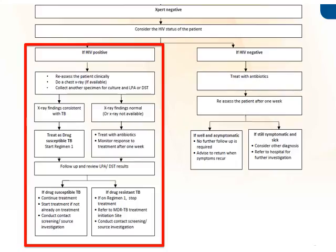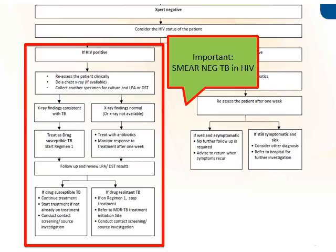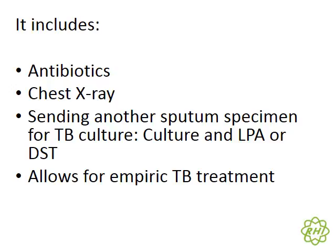Once we have our X-ray results, if they are suspicious of TB, even if the patient is GeneXpert negative, we will start that patient on TB treatment. The challenge comes if the X-ray findings are normal — the idea is to treat with antibiotics and monitor the response after one week. We would then review our LPA and DST results, but remember there will be a time lapse: within a week the patient will have finished their antibiotics, but it may be several weeks before the DST results come back. When you see that GeneXpert-negative patient, you need to start antibiotics, send for a chest X-ray, and send another sputum specimen for TB culture — requested as culture with LPA or DST.